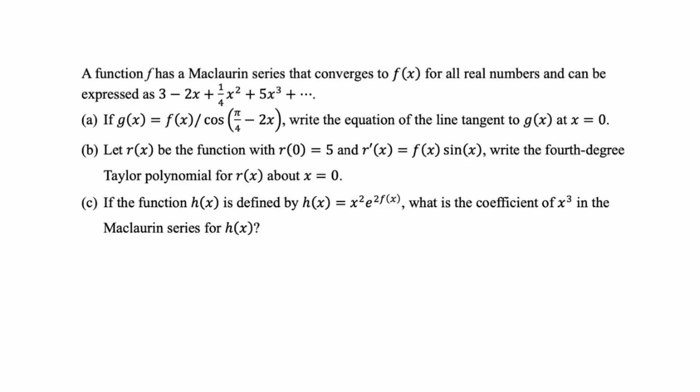In this video, we're going to solve a problem about Maclaurin series and Taylor polynomials. We've got a function f whose Maclaurin series converges to f(x) for all real numbers, expressed as 3 minus 2x plus one-fourth x squared plus 5x cubed plus dot dot dot.